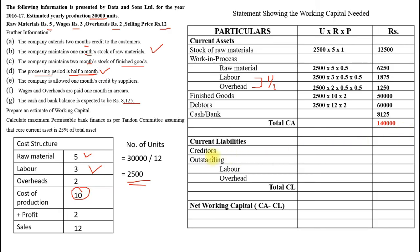Under current liabilities, creditors: 2,500 × 5 (raw material) × 1 month = 12,500. Outstanding wages: 2,500 × 3 × 1 = 7,500. Outstanding overhead: 2,500 × 2 × 1 = 5,000. Total current liabilities = 25,000. Net working capital = 1,40,000 − 25,000 = 1,15,000.